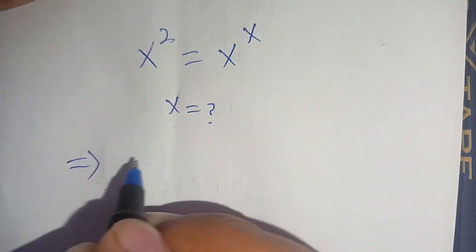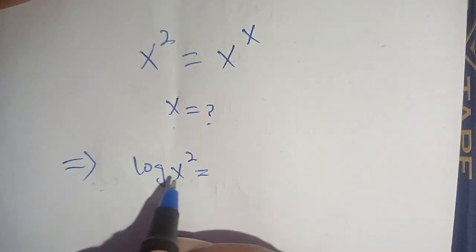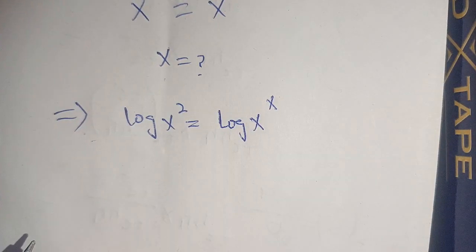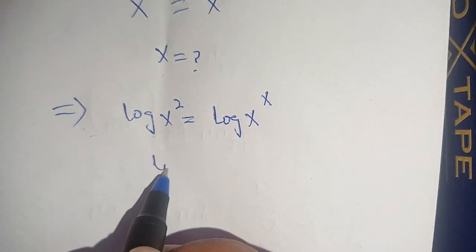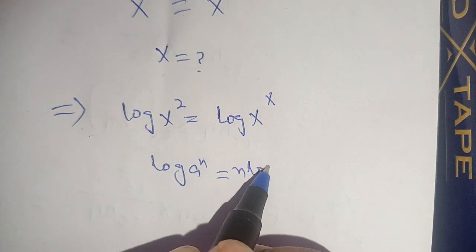On taking log on both sides, we have log(x²) = log(x^x). Now, we know that log(a^n) = n log(a).